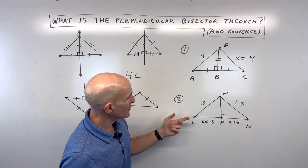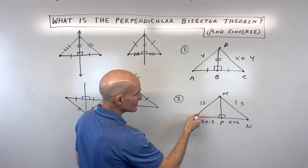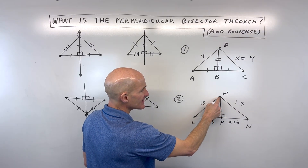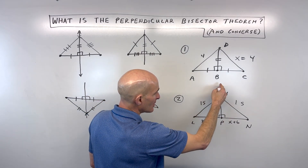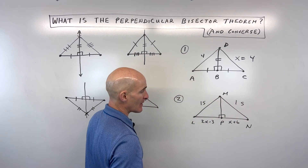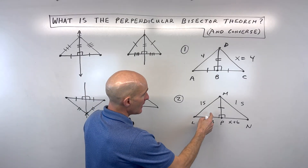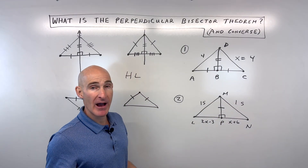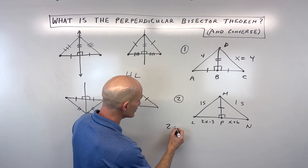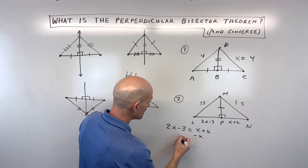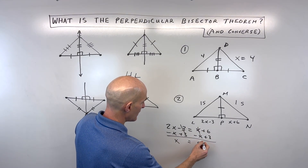For number two, we want to solve for X. We have point M, which is not on segment LN, and the distance to both endpoints is the same — both are 15. That tells us point M lies on the perpendicular bisector. The shared segment is common to both triangles by the reflexive property; the hypotenuses are congruent and both are right triangles, so by the hypotenuse-leg theorem the triangles are congruent. By CPCTC, the two sides are equal, so we solve: 2X minus 3 equals X plus 6. Subtracting X and adding 3 to both sides gives X equals 9.